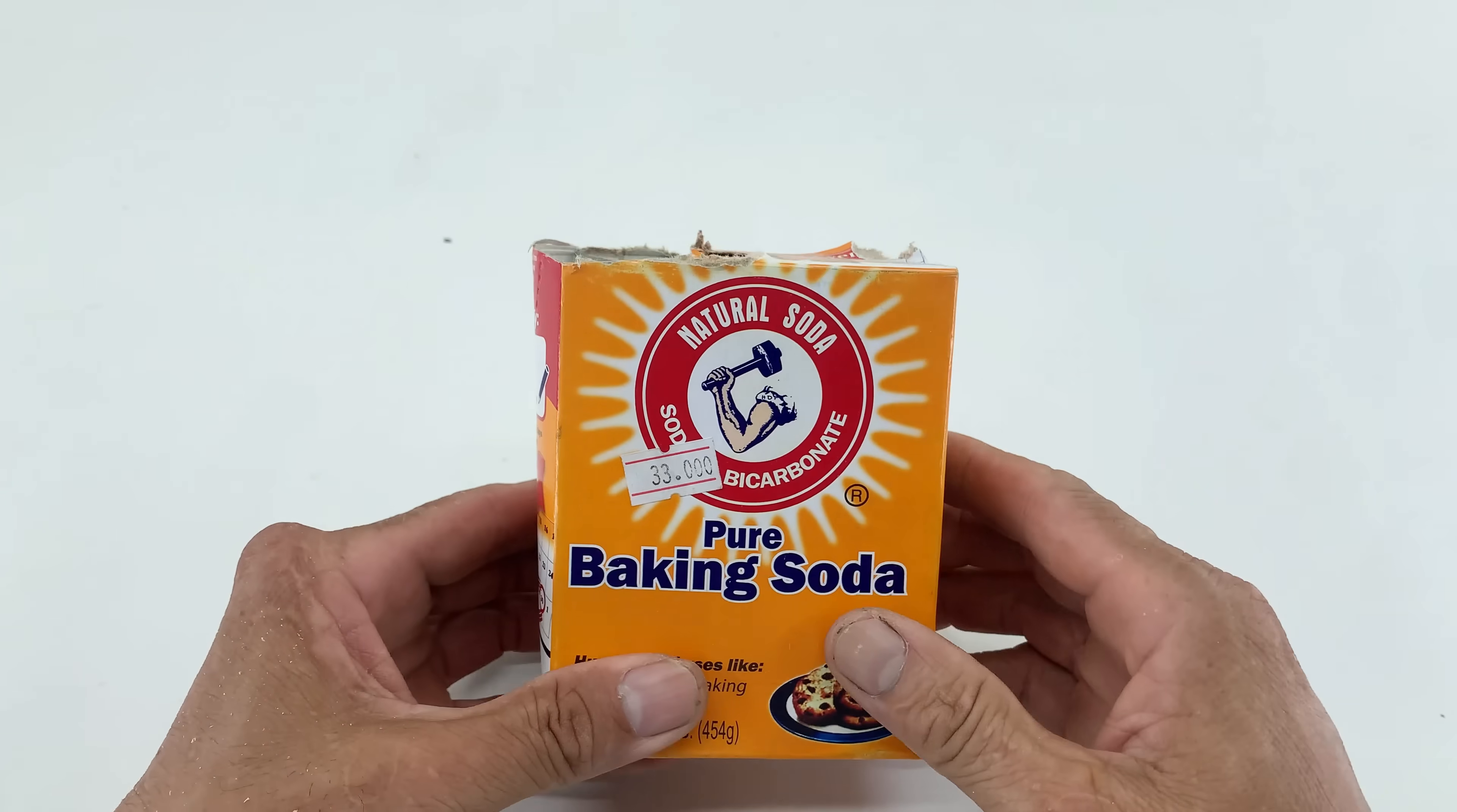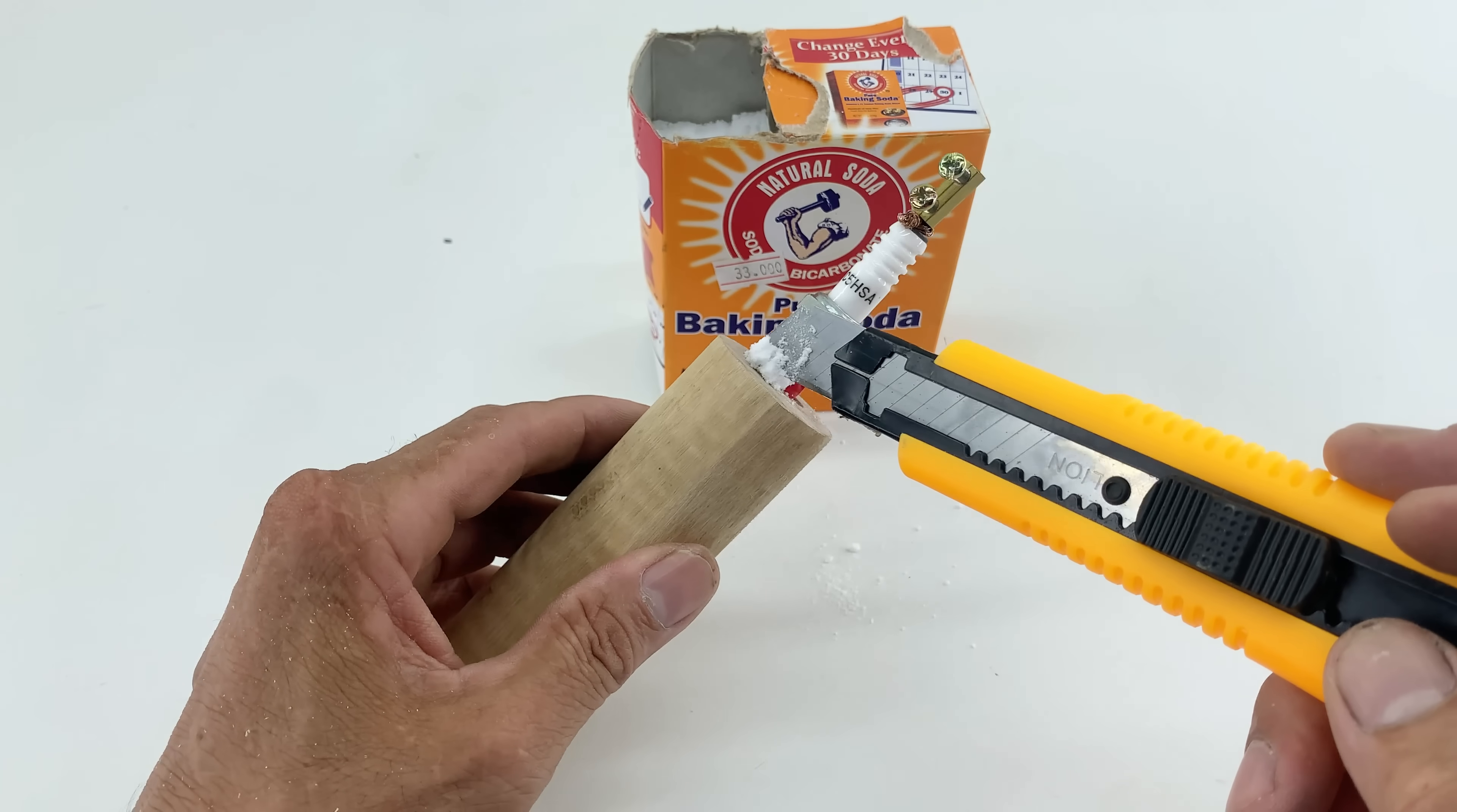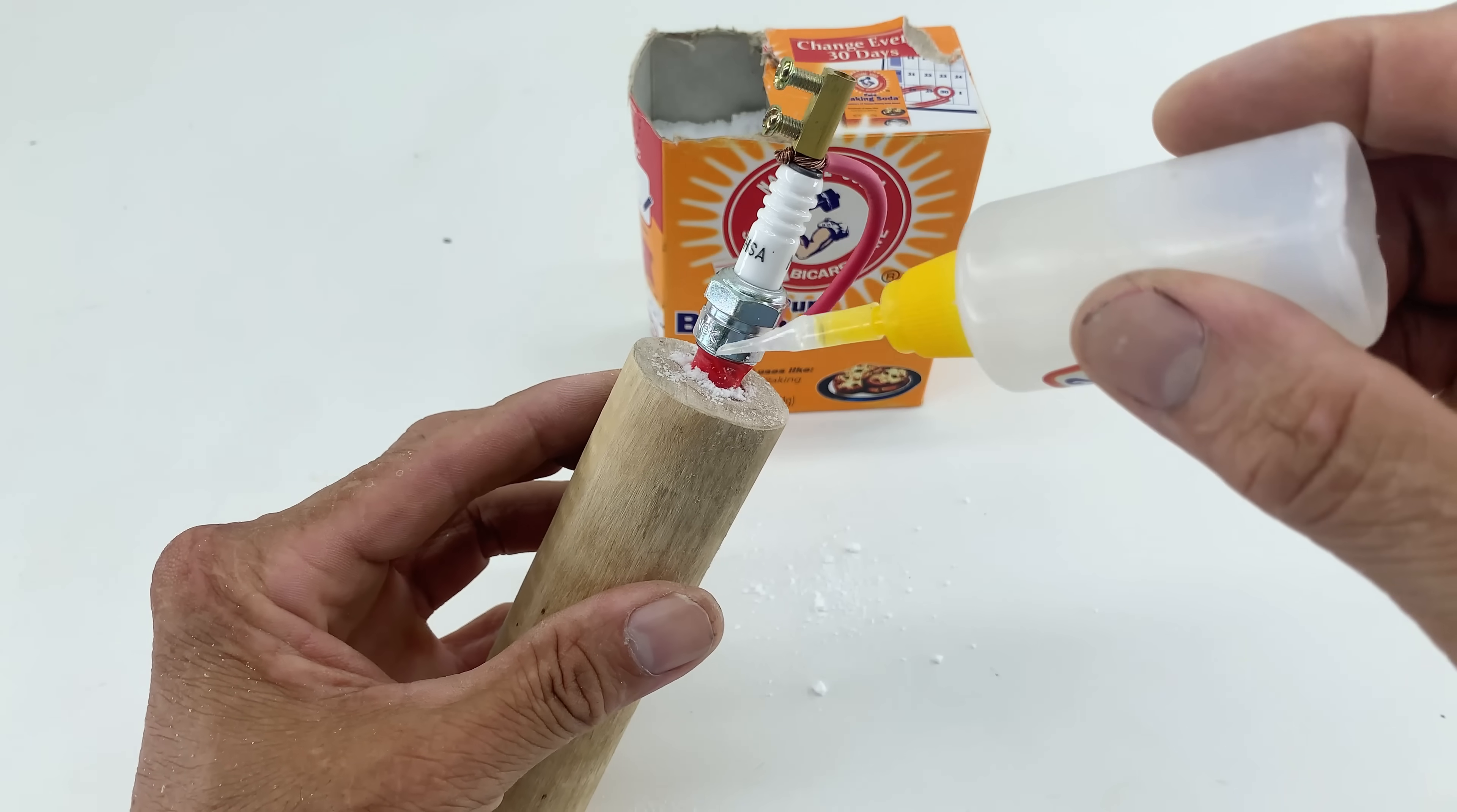For an extra strong bond and to fill any small gaps, I sprinkle baking soda over the superglue and then add more glue. This quick bonding technique creates a robust, almost instant adhesion, making the tool durable and safe. I repeated the process of adding glue and baking soda until the spark plug was completely secure.